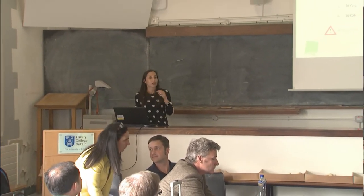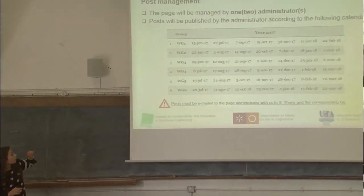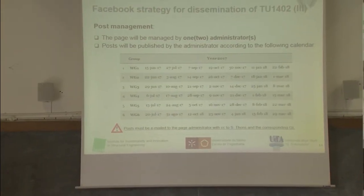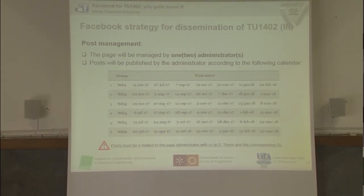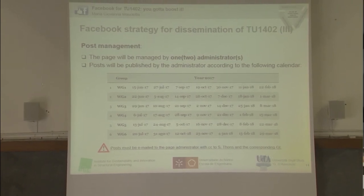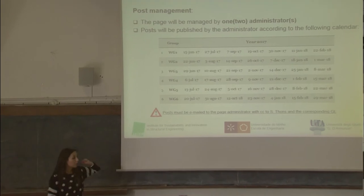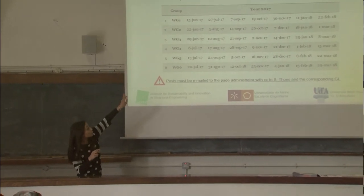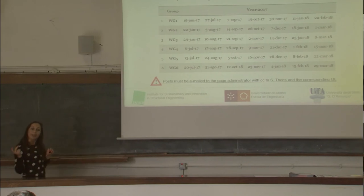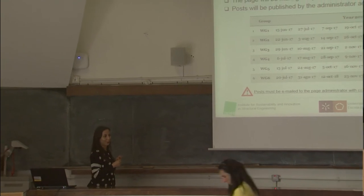This is a proposal of a publishing calendar — we can also send the detailed dissemination plan later. The proposal is to publish one post per week by each working group. This means each working group has a commitment to publish once every six weeks. If each working group is composed of many people and the group leader nominates someone each time, each of us will probably end up publishing once per year or even less. So it's not a very demanding task.